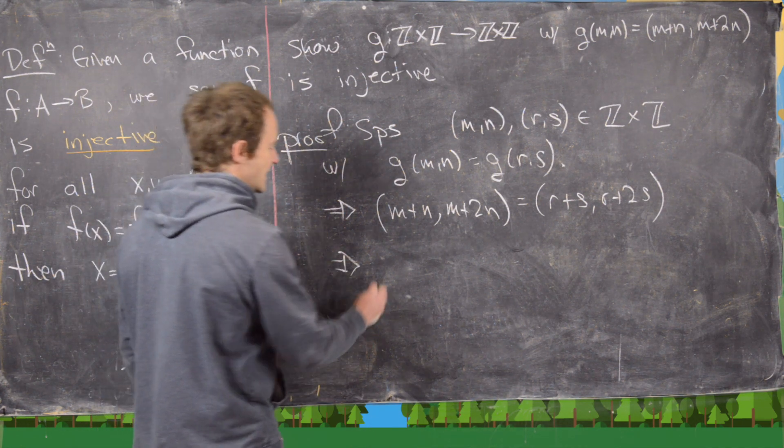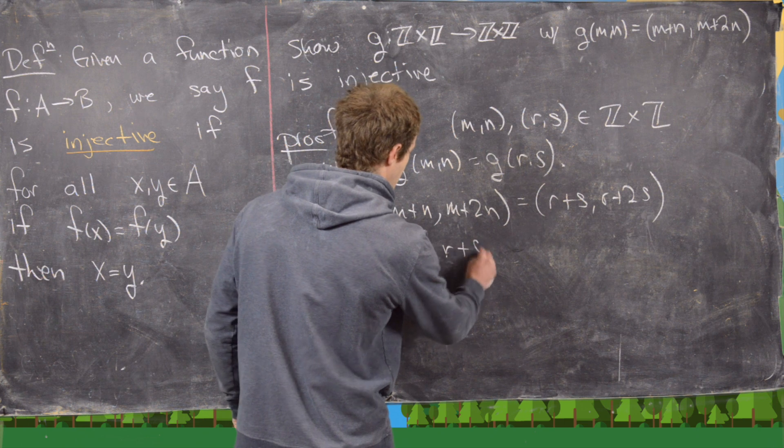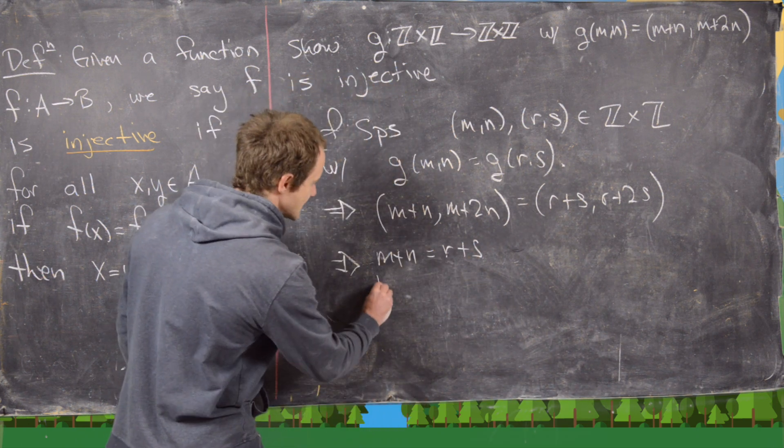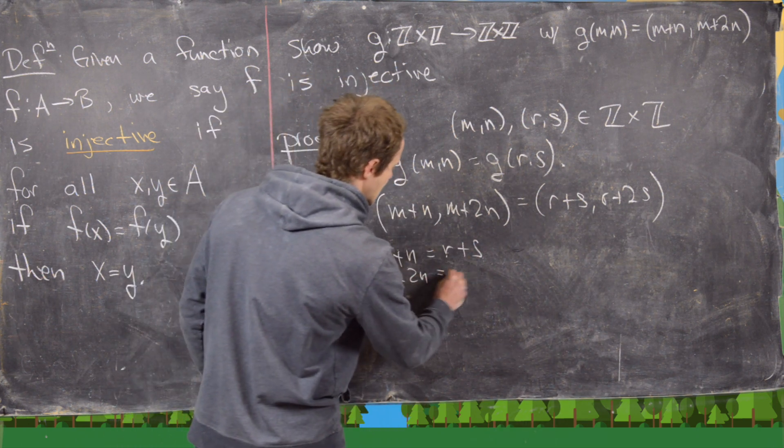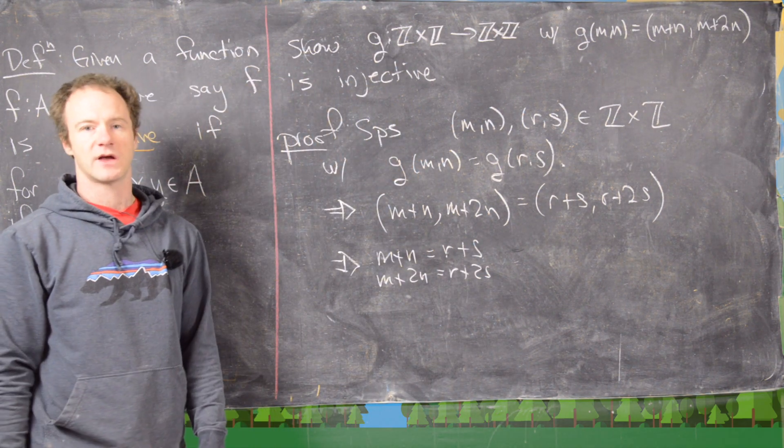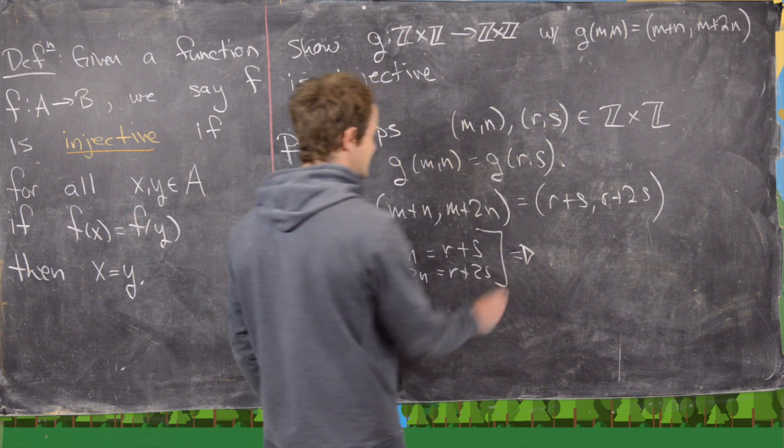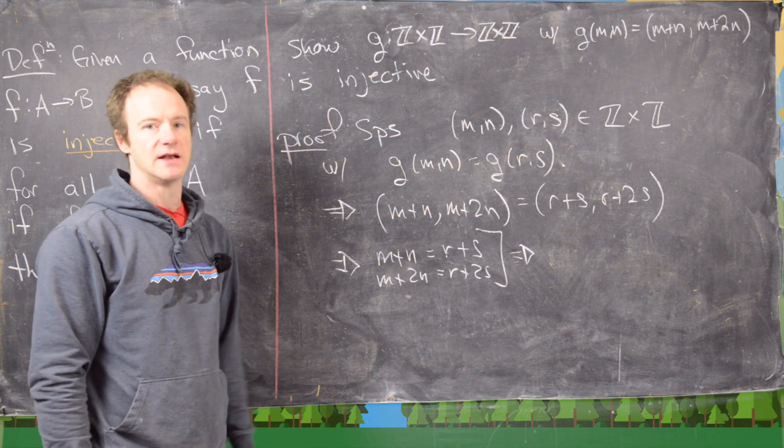So that gives us two equations: m plus n equals r plus s and m plus 2n equals r plus 2s. But now what we can do is solve this system of equations for m and n.